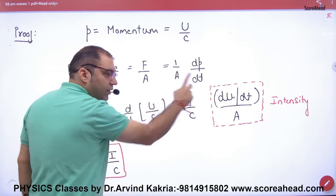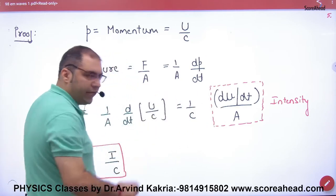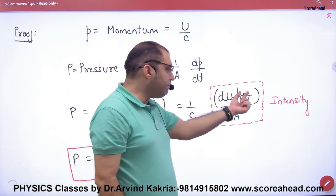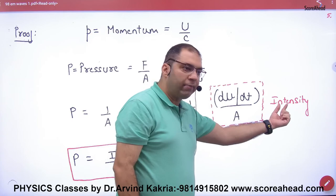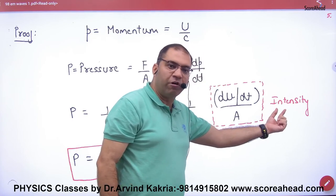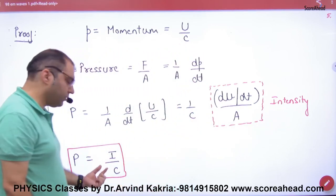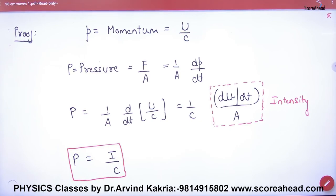U by C by C. So what happens? dU by dt. So dU by dt, who has divided by dt? So energy per second per unit area, what do we call intensity? So the formula, intensity by C. This is the formula for radiant pressure.